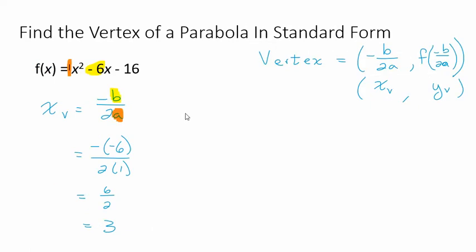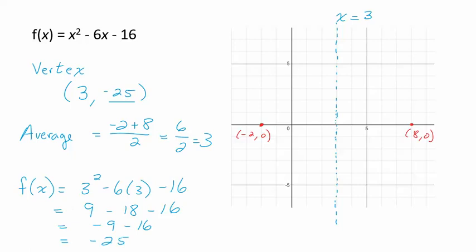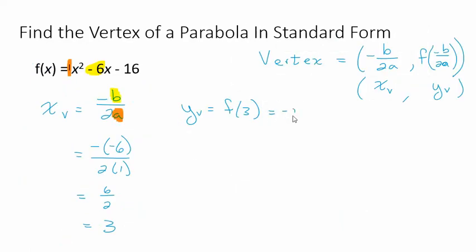To find the y-value, we take f of 3, which we already calculated earlier — it's negative 25. So the vertex is (3, negative 25), found very quickly with that formula. This is a formula you need to memorize, just like the quadratic formula. This is how you find the vertex of a parabola in standard form: f(x) = ax squared plus bx plus c. We'll learn another form called vertex form later.